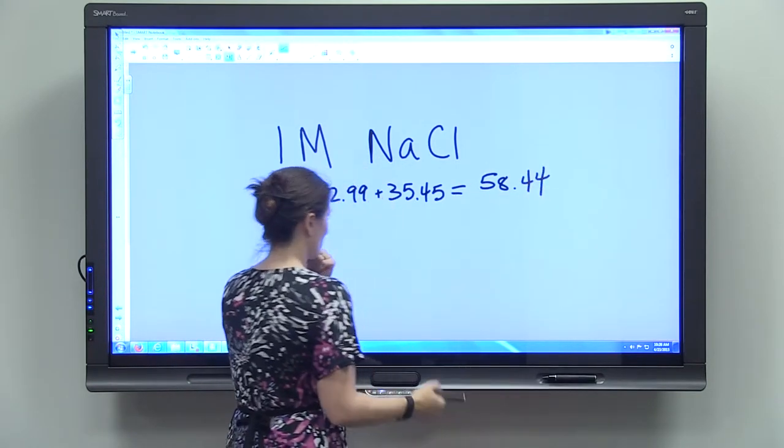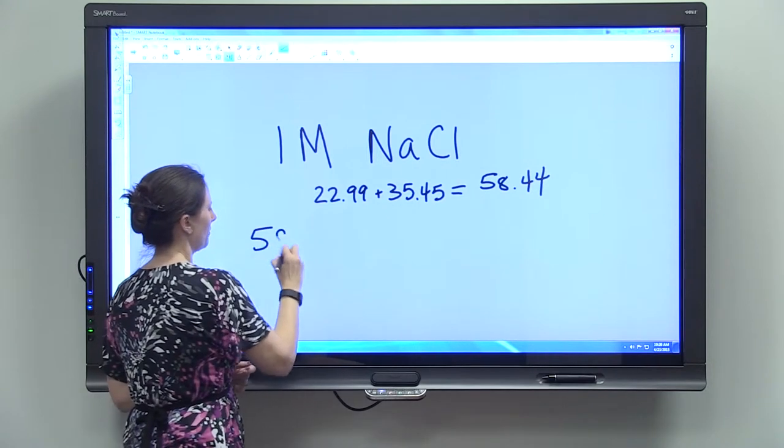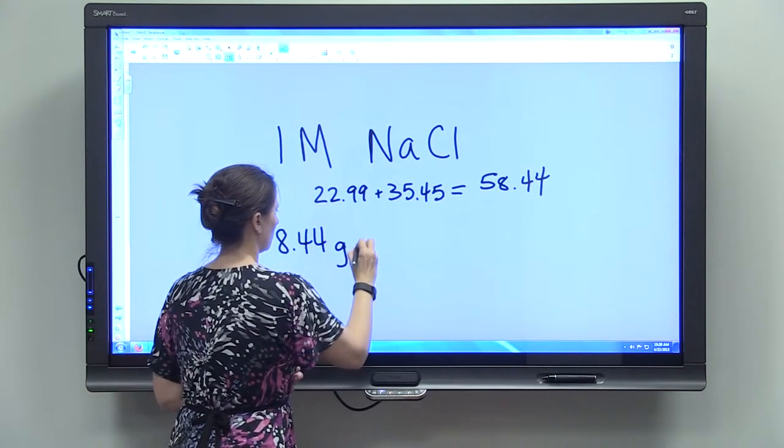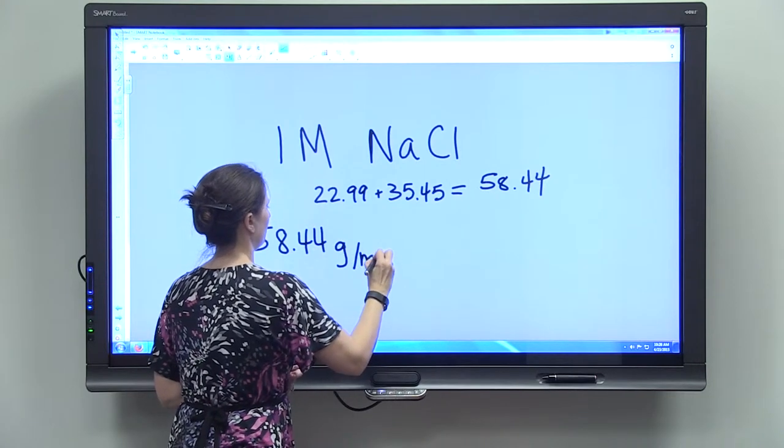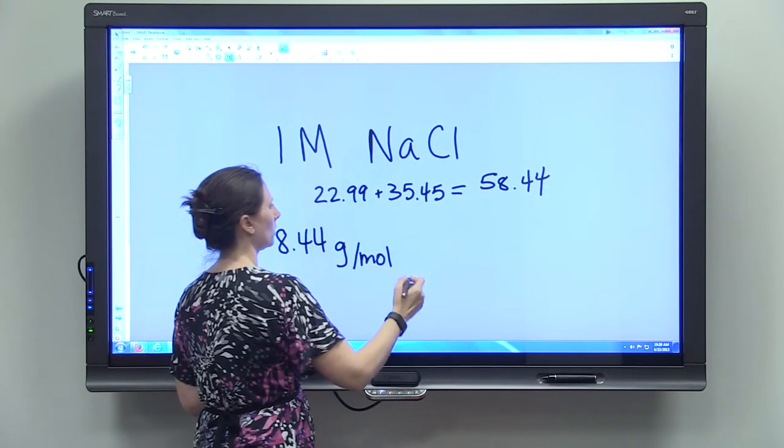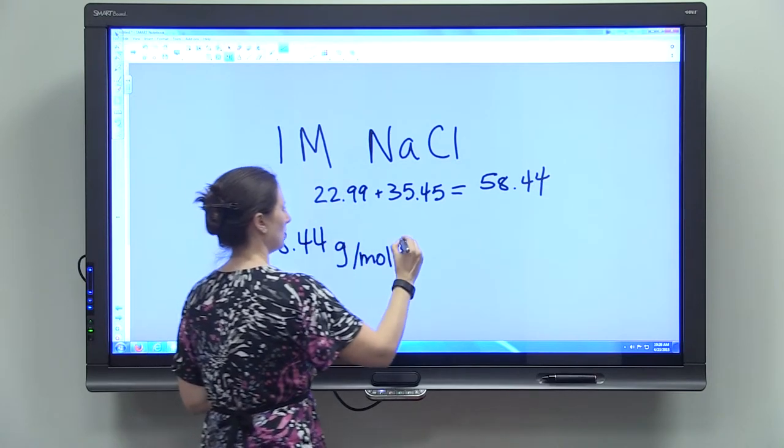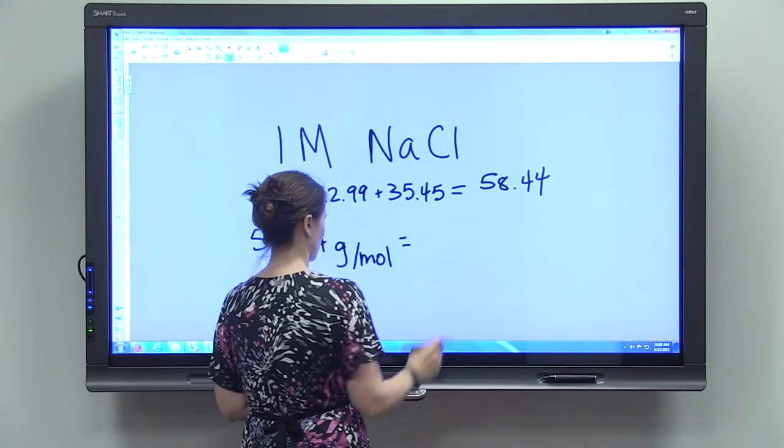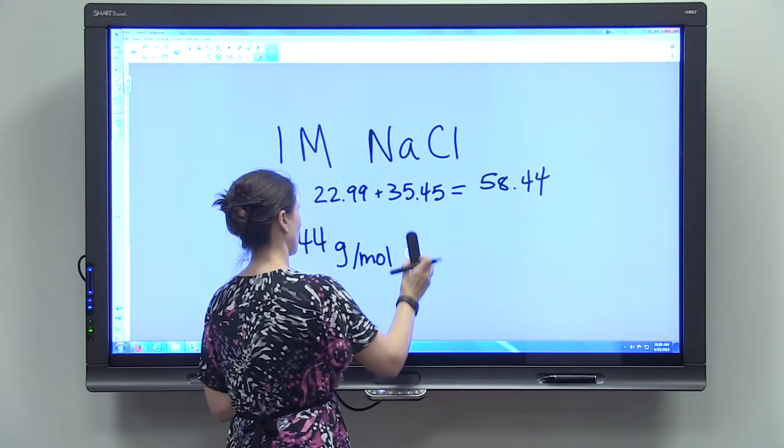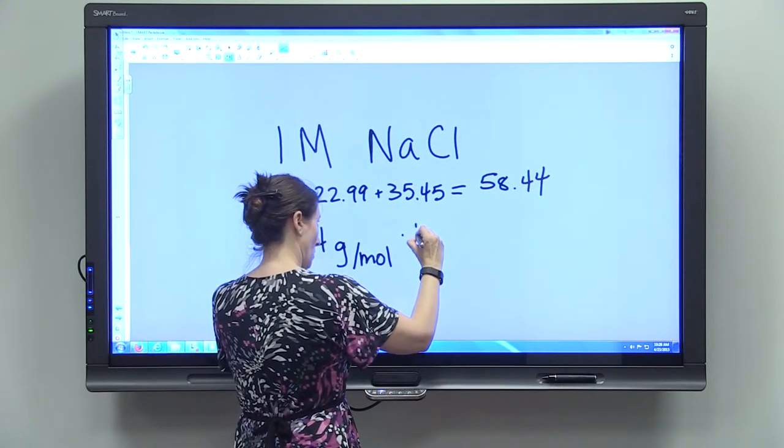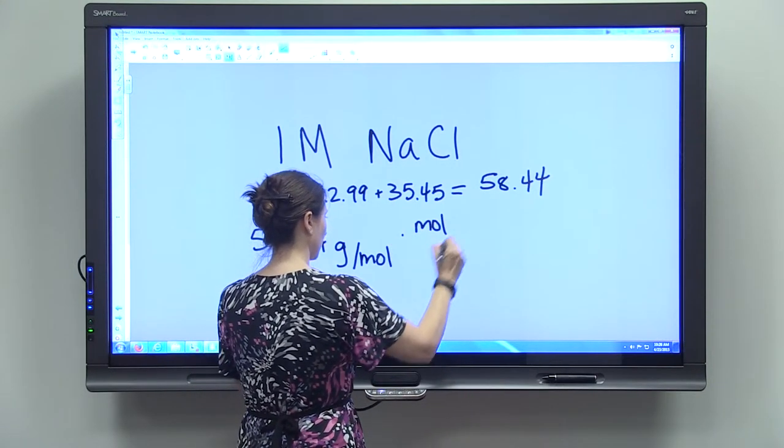So there's 58.44 grams per mole. If we want to figure out a one molar solution, one molar is equal to one mole per liter.